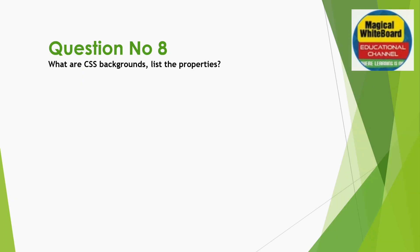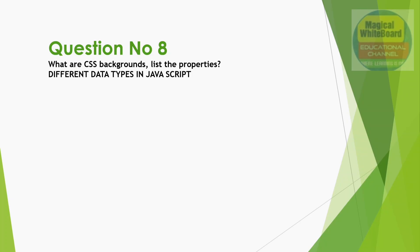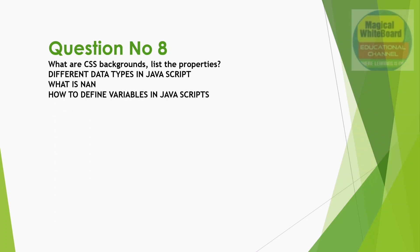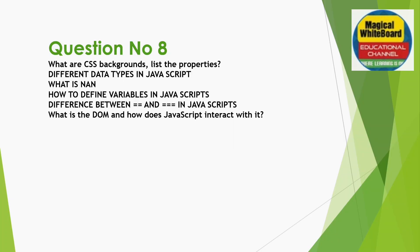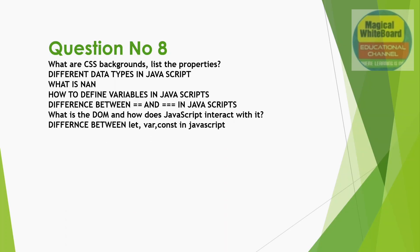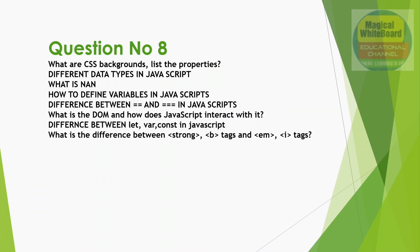Next question: What are CSS background properties? List the CSS background code and properties. Also cover access properties, list portal factor property. Discuss different date and time in JavaScript — with examples. What is NaN (Not a Number)? How to define variables in JavaScript — variable declaration with code. Difference between double equal to (==) and triple equal to (===) in JavaScript.